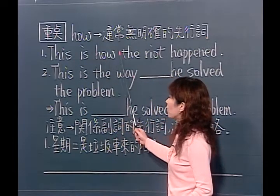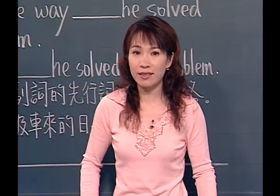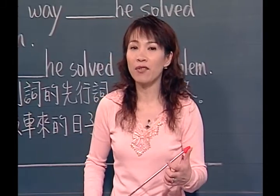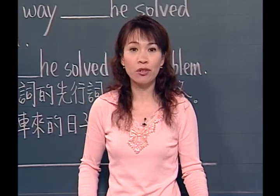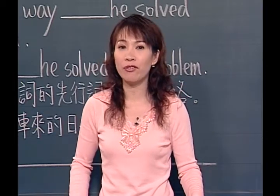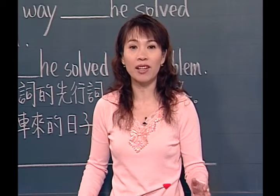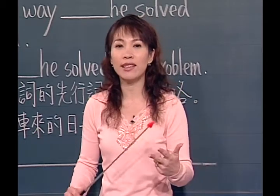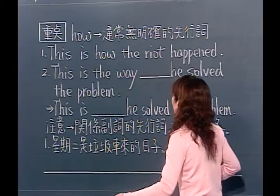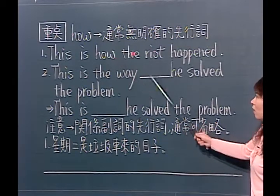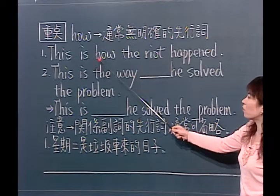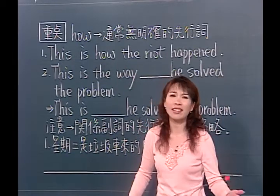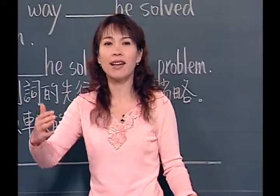这一个就是how。How一般来讲，how do you do? 你喜欢它吗？你多喜欢它呢？How是问程度，甚至于how可以问方法：How do you fix it? 你是用什么方法来修理这个东西的？How do you fix the radio？你是如何修理这台收音机的？How也可以问方法，所以how代表的东西很多：有手段、有方法、有目的，因为它代替的东西很多，不是那么明确，所以通常它没有一个很明确的先行词。